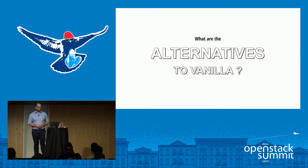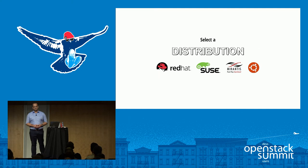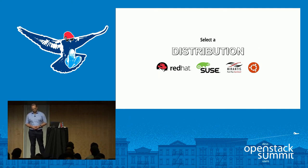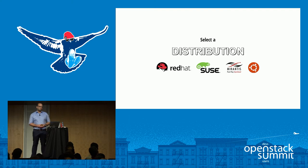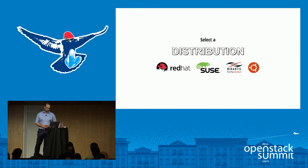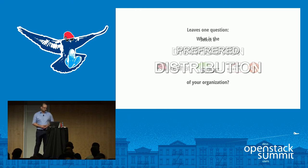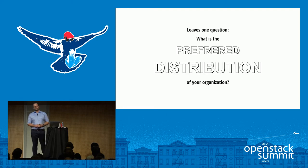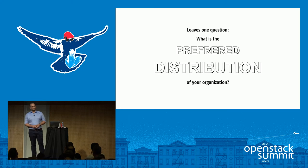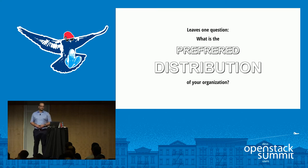What are the alternatives to using vanilla? Simply use one of the distributions. For this presentation, I chose Red Hat, SUSE, Mirantis, and Ubuntu — meaning Canonical. I left out others like HP solutions. The preferred solution often depends on your existing environment — if you're already a Red Hat shop, it's probably Red Hat. But if you're free to choose, you should take a deeper look at the distributions.